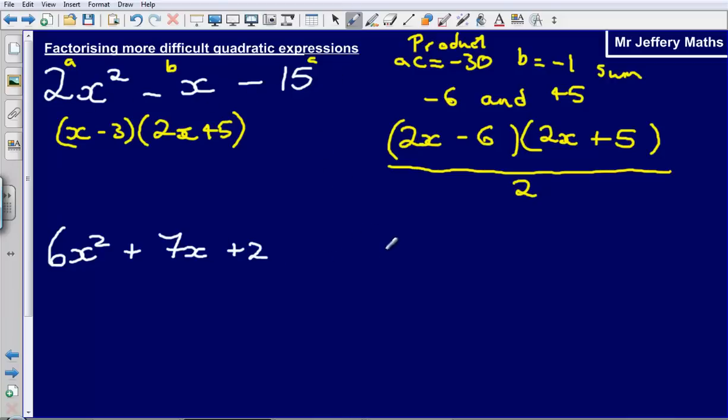So the next example, start off AC. AC is going to be, in this case AC is going to be plus 12. And B is going to equal plus 7. So next step, figure out 2 numbers that will multiply to make plus 12, but sum to make plus 7. So those 2 numbers are going to be plus 3 and plus 4.